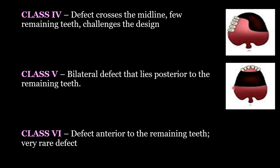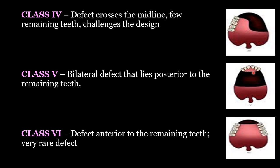Class five: a bilateral defect is present which lies posterior to the remaining teeth; splinting of the anterior remaining teeth is desirable so that labial stabilization can be done. Class six: the defect is present anterior to the remaining teeth; this is a very rare defect, mainly occurring due to trauma or congenital defect rather than planned surgical cases.